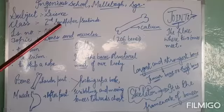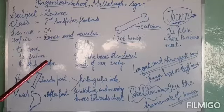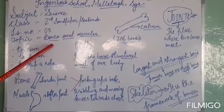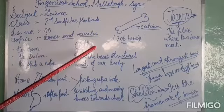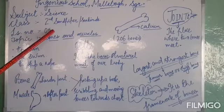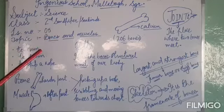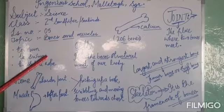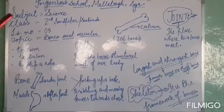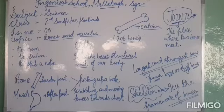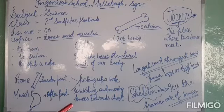Assalamu alaikum, how are you my sandpipers, how are you my seabirds? I hope you are all doing great. Today we are going to learn about the bones and muscles of our body. This topic belongs to lesson number five of your book. Each part of our body is important as we do different things using different parts of our body — we use our both hands and legs to run, to swim, to skip, and more.